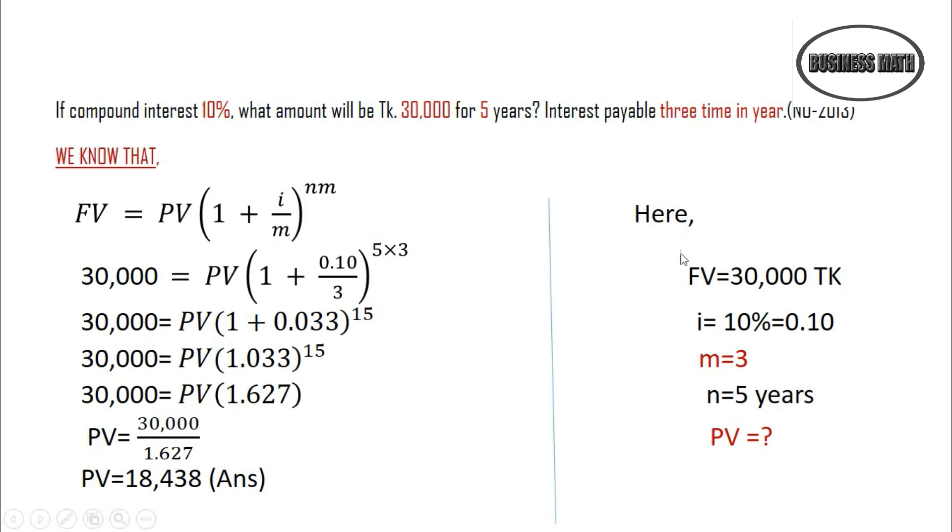Taking the solution: i is 10% or 0.10, m is 3. N is equal to 5 years. So FV is equal to 30,000.